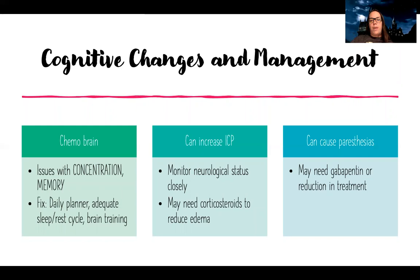Another neurological change can be paresthesias — numbness and tingling in their extremities. They may need gabapentin, and sometimes we even have to reduce their treatment if it's causing really significant paresthesias.